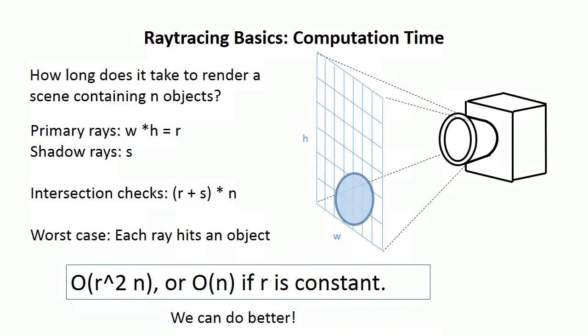So the question is, how long does it take us to render a scene containing a certain number of objects? Your primary rays, you have as many of them as you have pixels in your scene, and in the worst case, you have as many shadow rays or object checks as you have number of objects. That means you have R squared N number of operations to do, or O of N if R is constant. And we can do a little bit better than that.